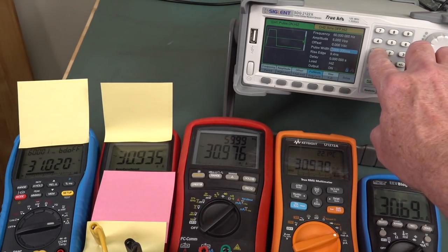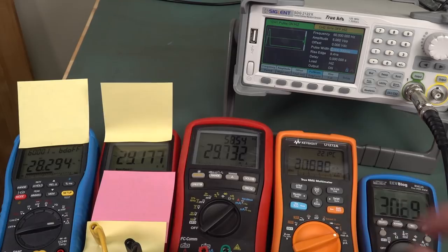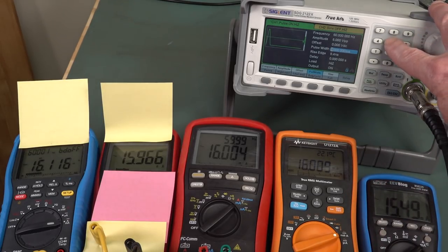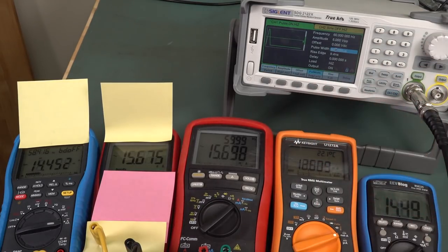I just thought that was interesting, so let's actually go down to one millisecond. And as we get shorter, these meters just have a hard time reading these ridiculously short pulses. The BM235 is going to do the worst, like 500 microseconds for example.